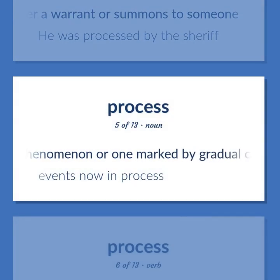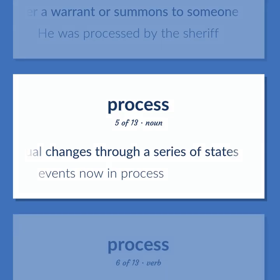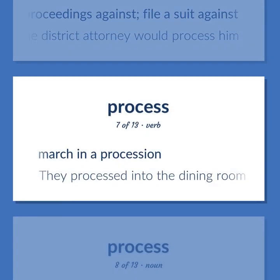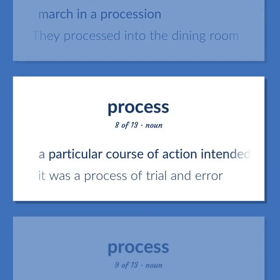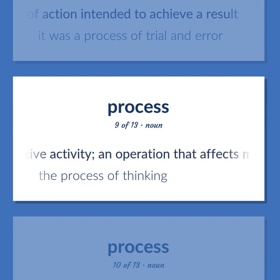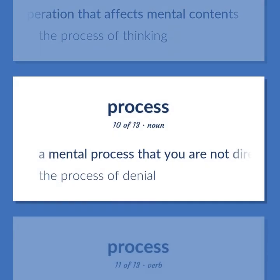Process: A sustained phenomenon or one marked by gradual changes through a series of states — events now in process. Institute legal proceedings against; file a suit against — he was warned that the district attorney would process him. March in a procession — they processed into the dining room. A particular course of action intended to achieve a result — it was a process of trial and error. Psychology: The performance of some composite cognitive activity; an operation that affects mental contents — the process of thinking. A mental process that you are not directly aware of — the process of denial.